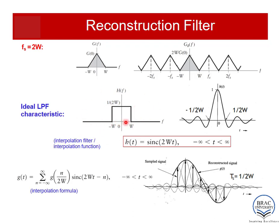The low-pass filter is a square wave in the frequency domain — considering both positive and negative directions. A square wave in the frequency domain corresponds to a sinc wave in the time domain, as you should know from your signals course. The sampled spectrum in frequency domain corresponds to a weighted impulse train in time. So multiplying the low-pass filter with the spectrum in frequency domain is equivalent to convolving the sinc function with the weighted impulse train in time domain. This convolution is how we recover the original signal.